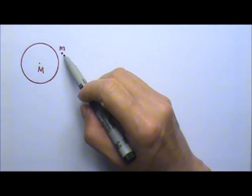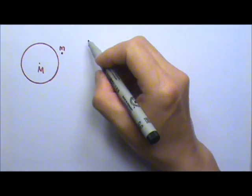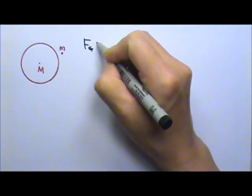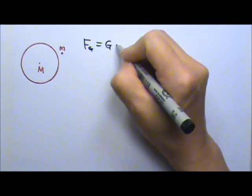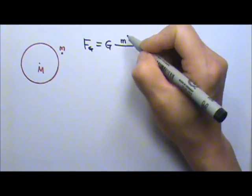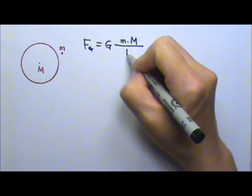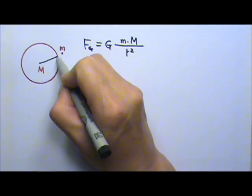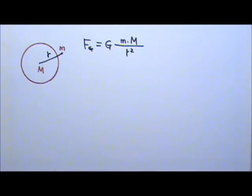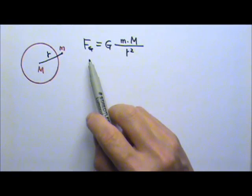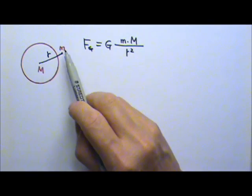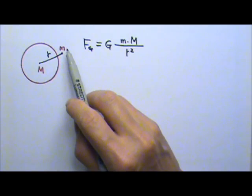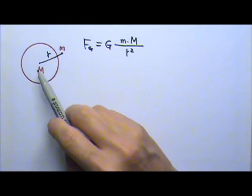Suppose we are considering a planet like the earth, big M, and an apple, little m. The gravitational force between the two would be big G, little m, times big M over R squared, where the R is the distance from center to center. This gives us the gravitational force on the earth by the apple. It also is the force on the apple by the earth.